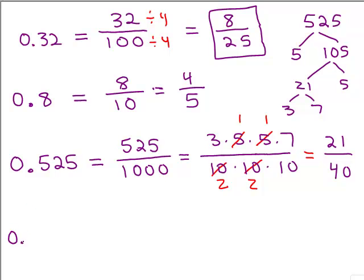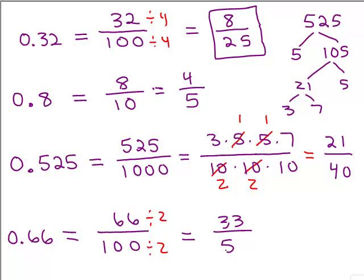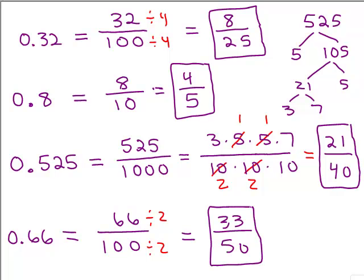All right, let's look at these next three. We had 0.66. All right, so what do we have after the decimal point? We have 66 over 100. All right, I think this is easier to do in our head. See how 2 goes into both of those numbers? So if I divide the top and bottom by 2, this gives me 33 fiftieths.